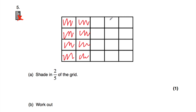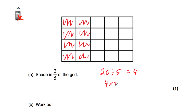Alternatively, because there are twenty boxes in this grid, we can work out two fifths of twenty to find how many boxes to shade. To get two fifths of a number, we divide by the bottom and times by the top. So we take twenty, divide by five — twenty divided by five is four — then multiply by the numerator: four times two is eight. So we shade in eight of the boxes, and that's it.